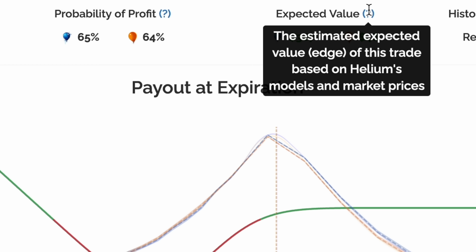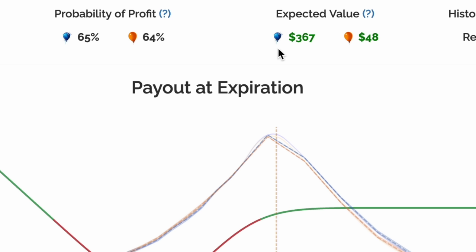You can think of expected value as the average over all potential future outcomes of this trade. Expected value represents the positive or negative edge we estimate in a new potential trade. Both Helium's machine learning models and the market agree that this trade has positive expected value, or edge.